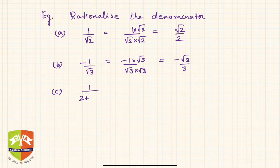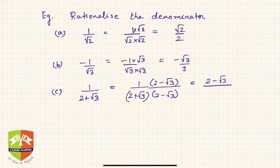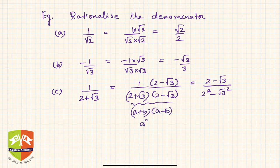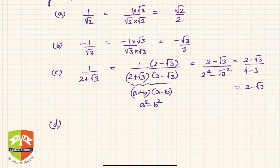For a compound surd like 2 plus root 3, rationalize 1 over (2 plus root 3) by multiplying numerator and denominator by the conjugate (2 minus root 3). This gives (2 minus root 3) over (2 squared minus root 3 squared), which is (2 minus root 3) over (4 minus 3), hence 2 minus root 3 over 1, which equals 2 minus root 3.